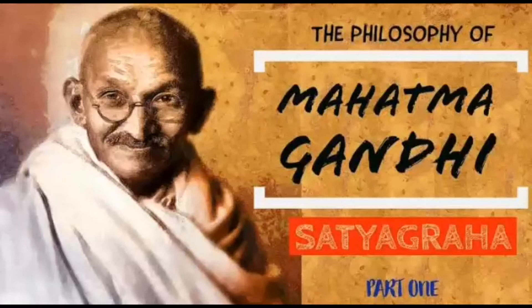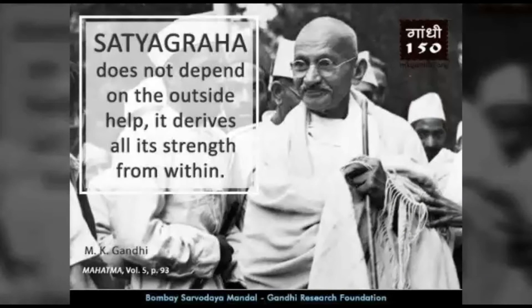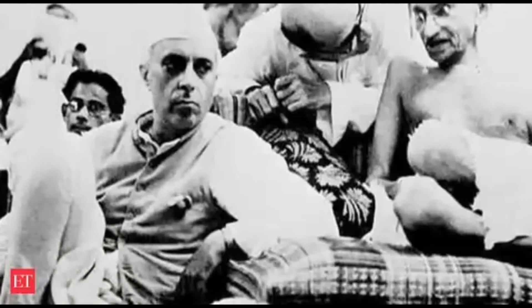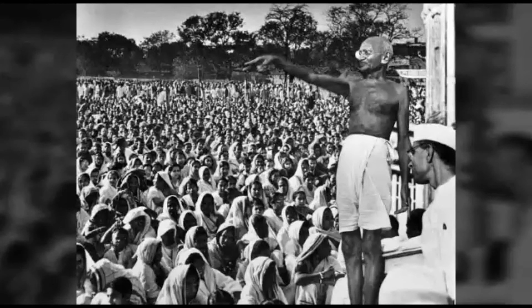Philosophy of Satyagraha: Gandhiji brought in a novel technique of satyagraha in the popular movement. Satyagraha means insistence of truth. The main objective of satyagraha is that through patience, an unjust person is made aware of truth and justice and transformation is brought in his views. A person following satyagraha should never use violence or untruth — these were the teachings of Gandhiji. Later, not only in India but in many parts of the world, people adopted the path of satyagraha to fight against injustice. Gandhiji's path of satyagraha made an impact on Martin Luther King, who was struggling for the rights of the blacks in America, as well as on Nelson Mandela in South Africa.